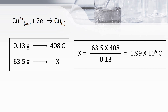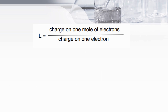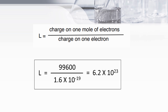But this is for 1 mole of copper. To find the charge for 1 mole of electrons, we divide by 2 since the copper ion and electron are in a 1:2 ratio. Therefore, 1.99 × 10⁶ ÷ 2 = 99,600 coulombs. Substituting into the formula L = charge on 1 mole of electrons ÷ charge on 1 electron: 99,600 ÷ 1.6 × 10⁻¹⁹ = 6.2 × 10²³. This is a very good approximation to the accurate value of 6.02 × 10²³. So we have found Avogadro's constant.